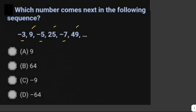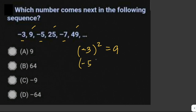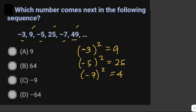The perfect squares are the result of squaring the previous number. The second number, 9, is the product of squaring the first number, negative three: (-3)² = 9. The third number is negative five, the next odd number after negative three. The fourth number is 25, which is (-5)² = 25. The fifth is negative seven, the next odd number, and the sixth is 49, since (-7)² = 49.